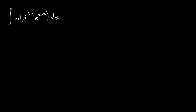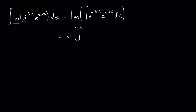Here we can exploit another helpful property of imaginary and real components. This function, which extracts the imaginary component of a complex number, is linear, so I can actually pull it out of the entire integral. That integral is the same thing as the imaginary component of this integral. And here I can join together those two exponentials, so I get e to the minus 3 plus 5i times x dx.